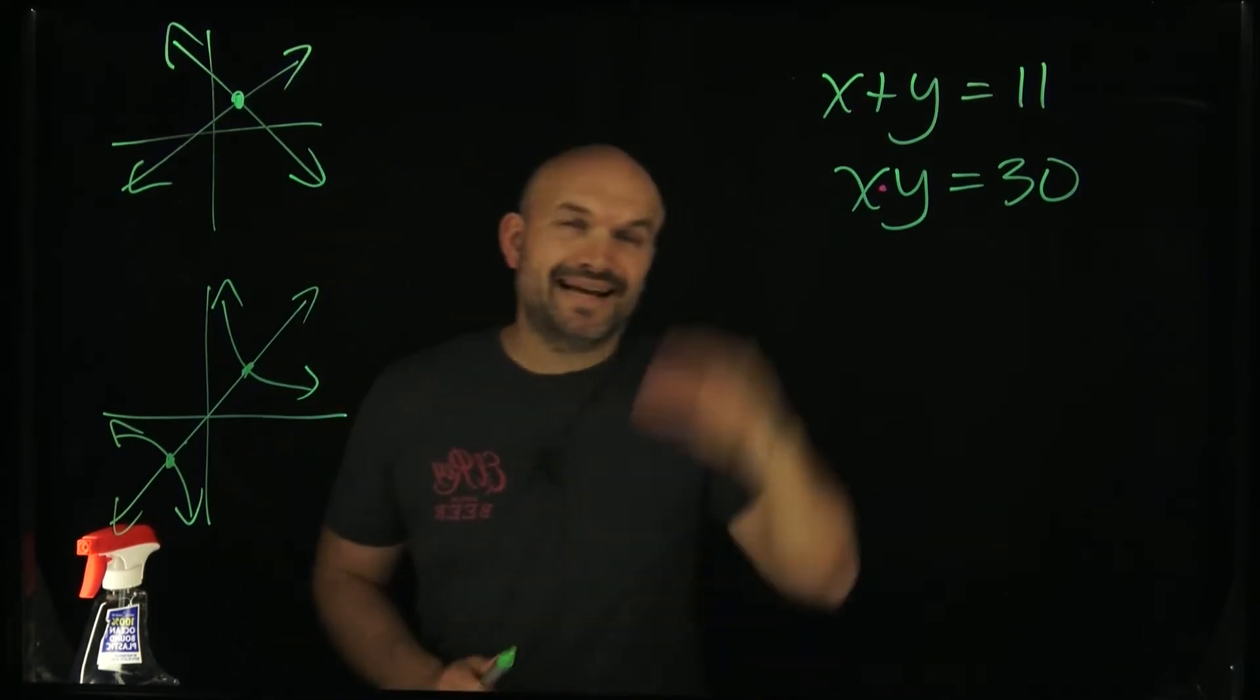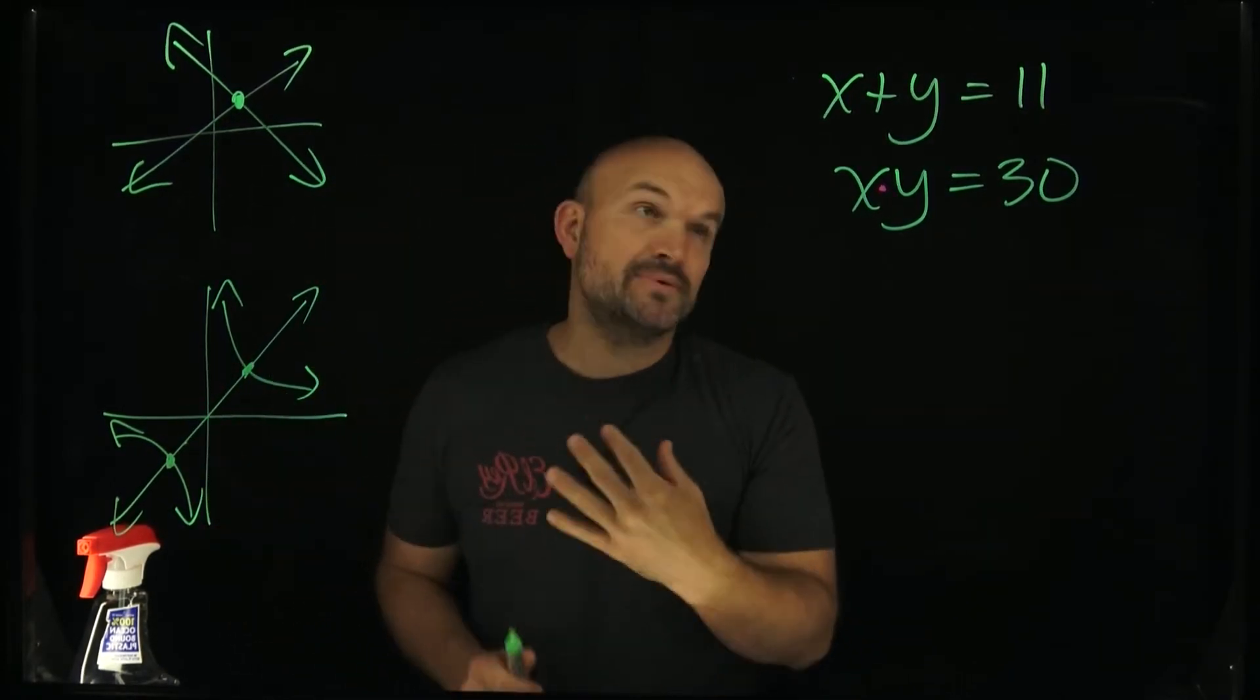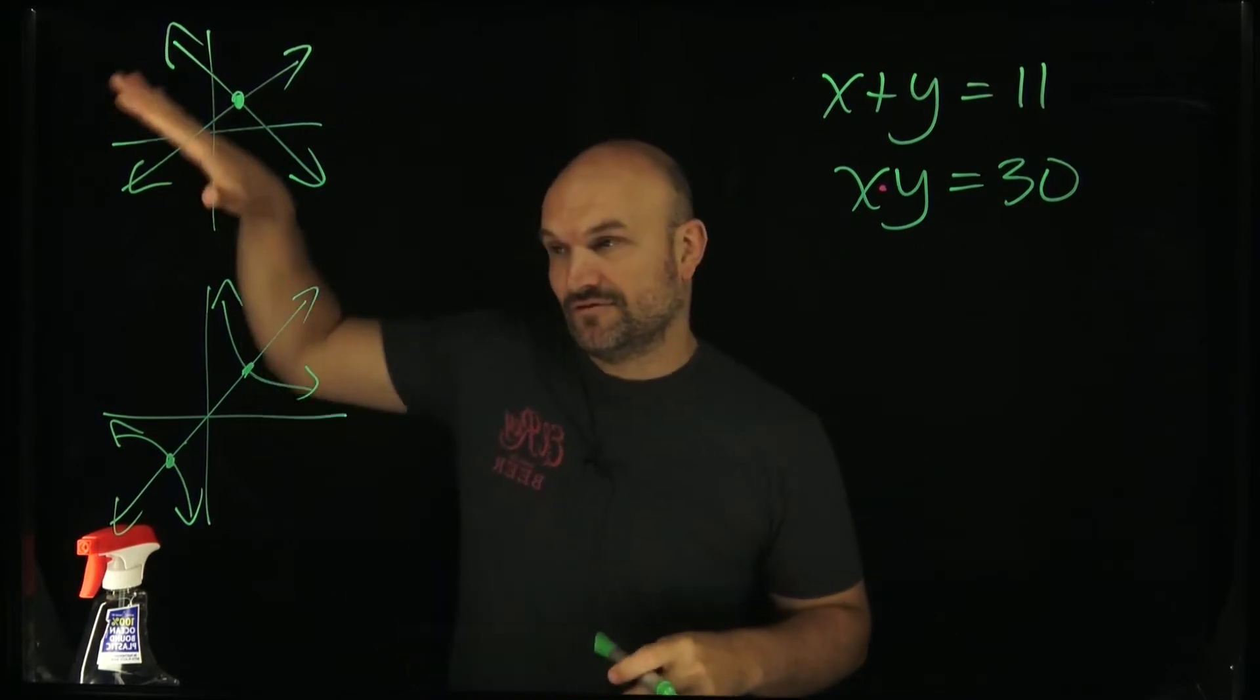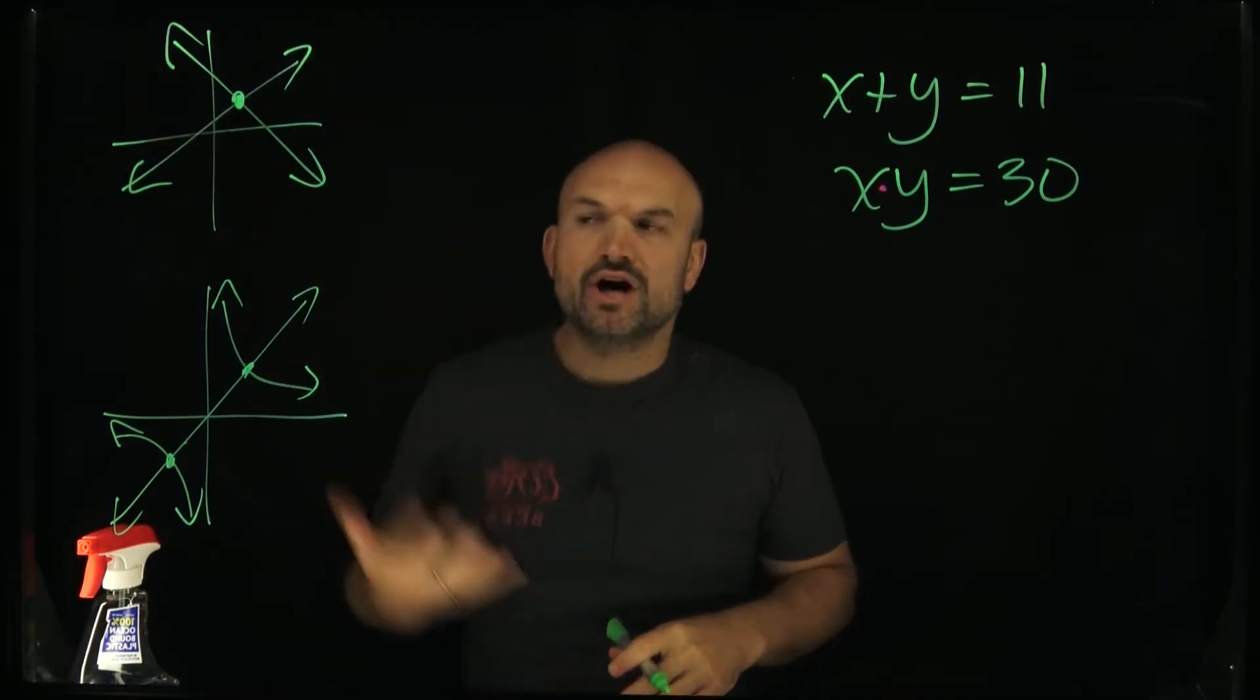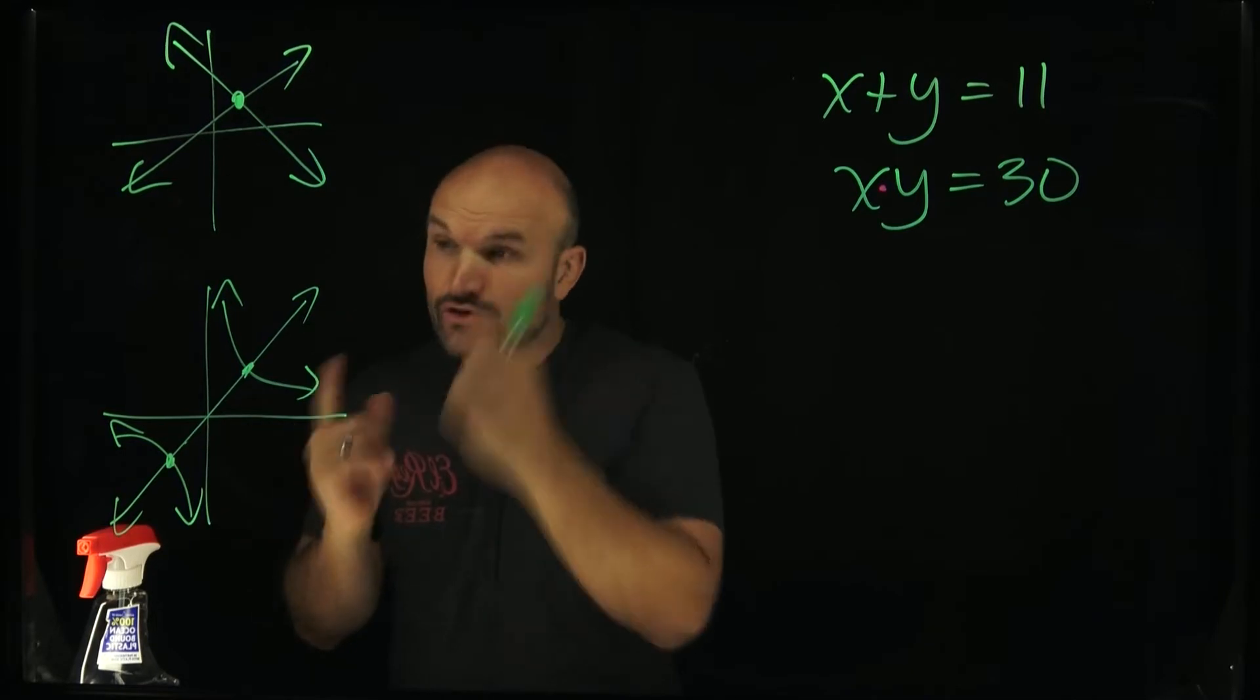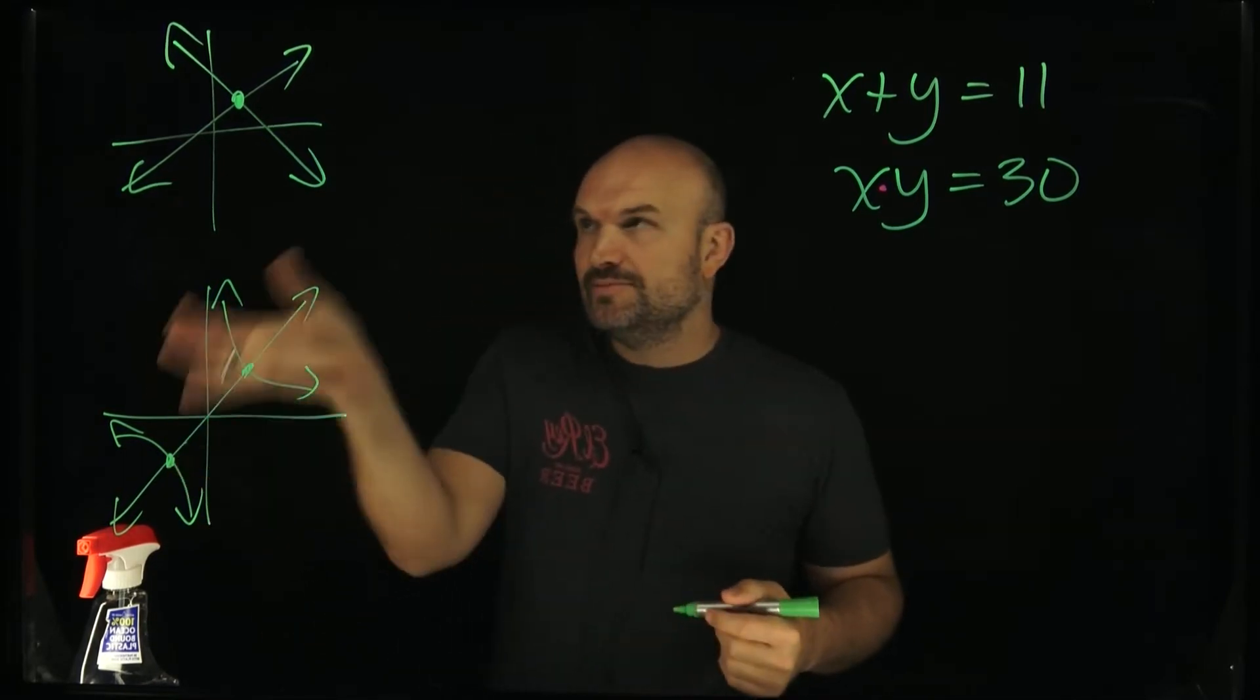Now, I don't know exactly what this graph looks like. And actually, I already know that is not the right representation because that's going to be negative x. Therefore, it's going to have a negative slope. Regardless...